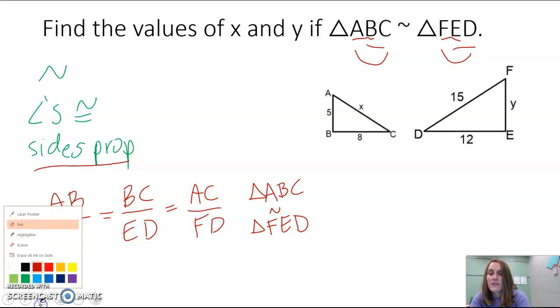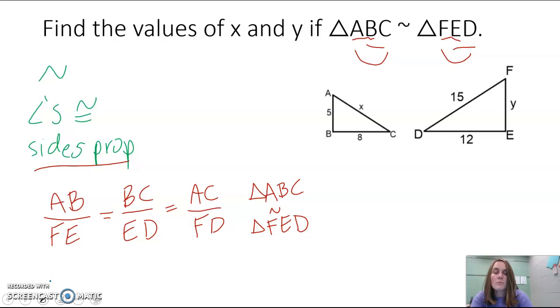And now I can start filling everything in that we're given. AB, if we look at our triangle, is equal to 5. FE, we don't know. That's Y. So I have 5 over Y equals BC here is equal to 8. And ED is equal to 12. So it equals 8 over 12. And then AC, we don't know. That is labeled as X, but FD we do know is 15.